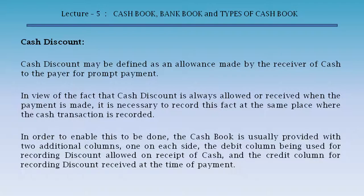In order to enable this to be done, the cash book is usually provided with two additional columns, one on each side — the debit column being used for recording discount allowed on receipt of cash, and the credit column for recording discount received at the time of payment.